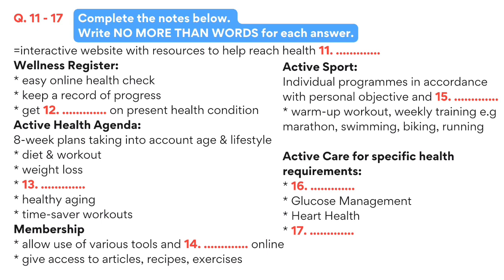It has a register, which includes a quick online check to assess your health and keep track of your progress. What do you want to do — lose weight, give up smoking, manage your blood glucose levels, or just improve your overall fitness? Use the simple online assessment tool and receive a personalized report on your current state of health. This is what we call your wellness register.